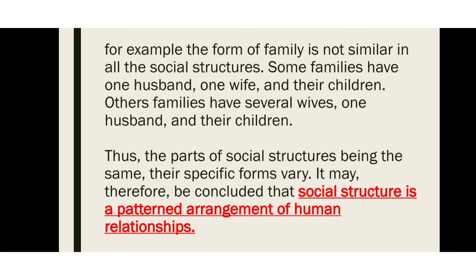In some families, there is one husband, one wife, and their children — a norm that is followed. In other types of families, there are several wives or several husbands. There are several patterns found in sociology, such as specific types of marriage including polygyny.